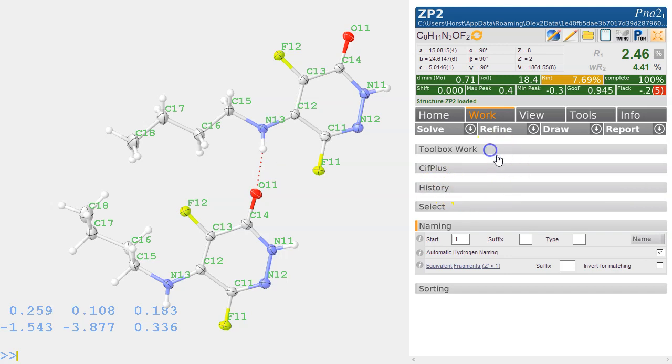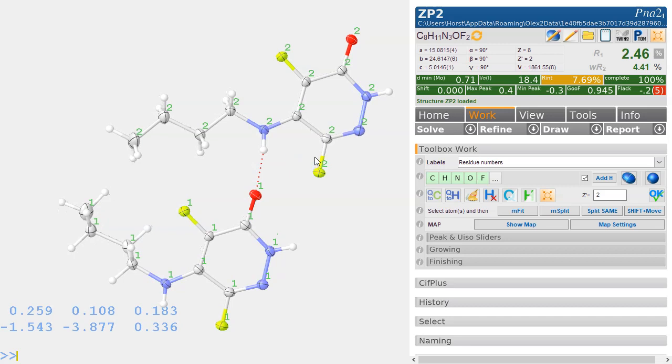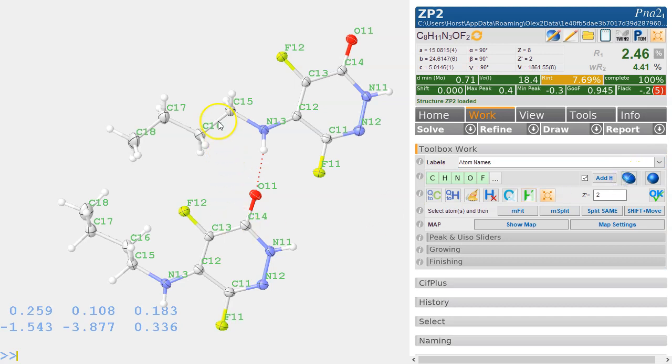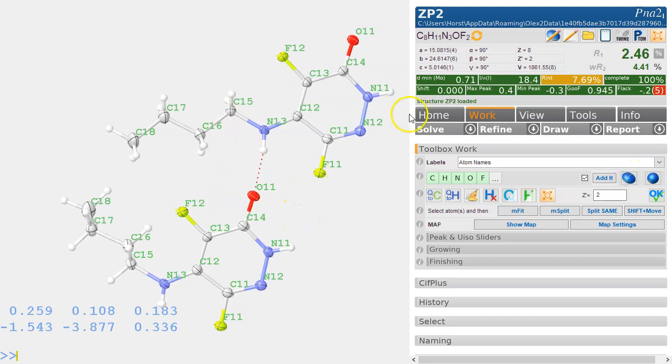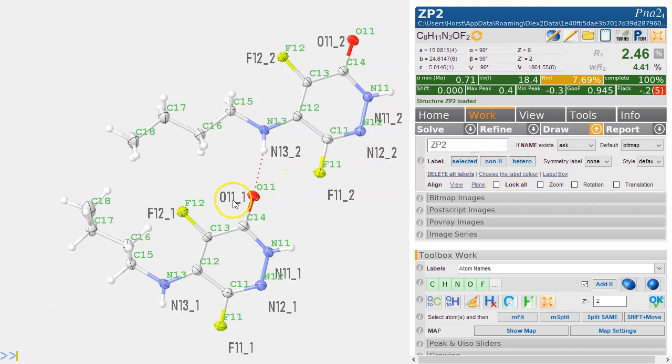If you go over to Toolbox Work and look at the labels, there is the option of having the residue numbers. You will see this is now residue one and this is residue two. Otherwise the labels are exactly the same. If you just go for the names, the atom names, then you will find them identical. Internally of course they're called slightly differently. They've got the underscore for the resi one and the underscore two for the resi two.